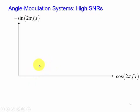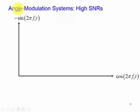We're going to look at this phasor diagram where we have the horizontal axis as cosine 2π f_c t and the vertical axis as negative sine 2π f_c t, since we're looking at the angle-modulated signal for the high signal-to-noise ratio case, and we're going to use the phasor representation.